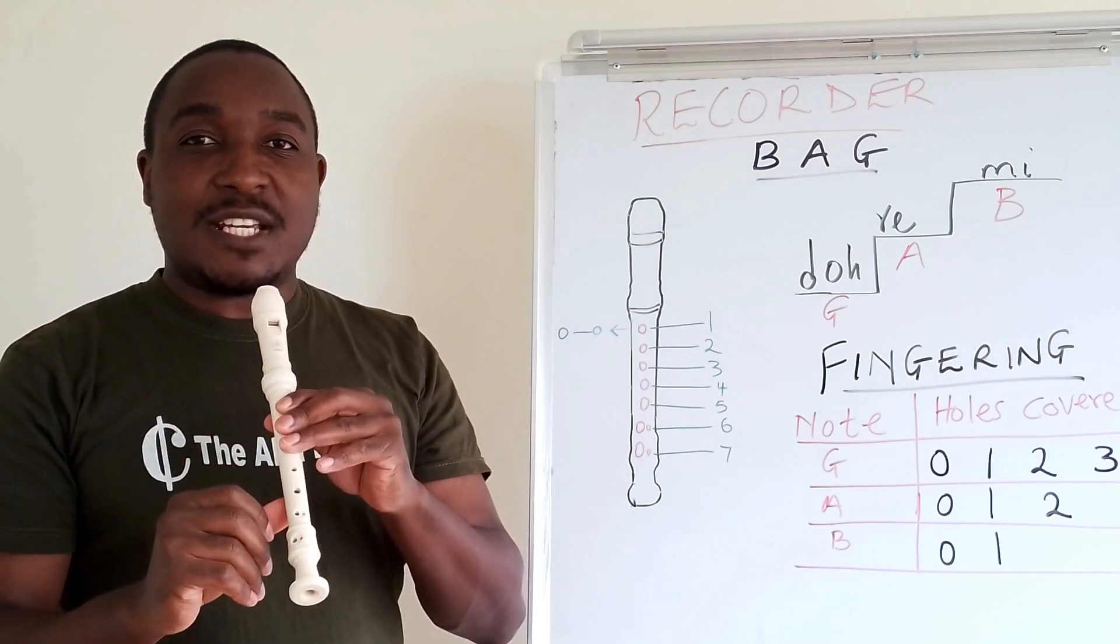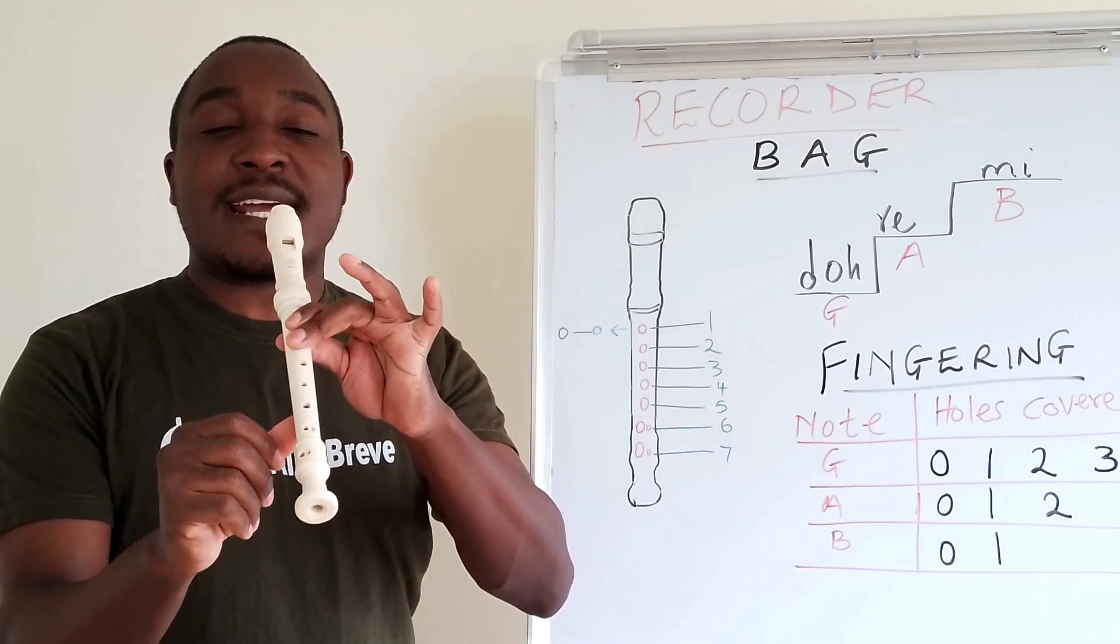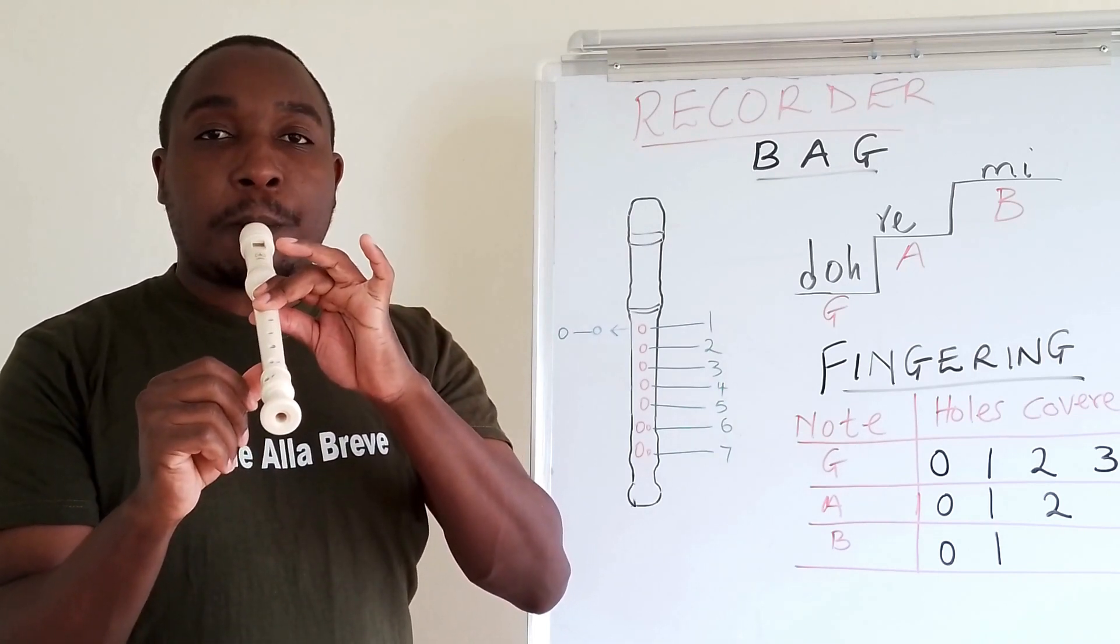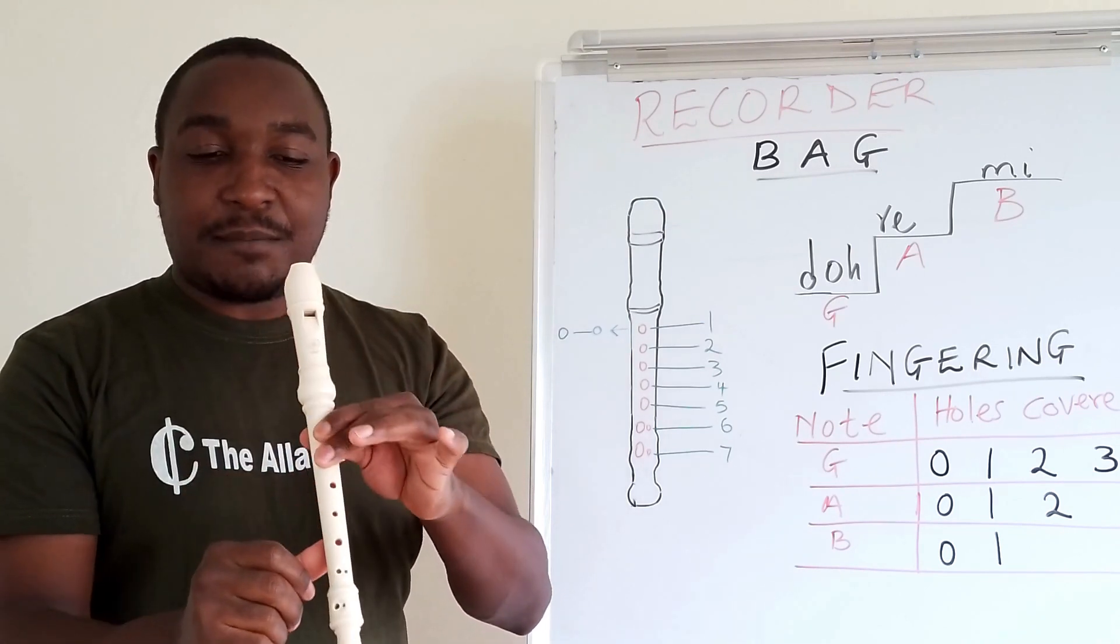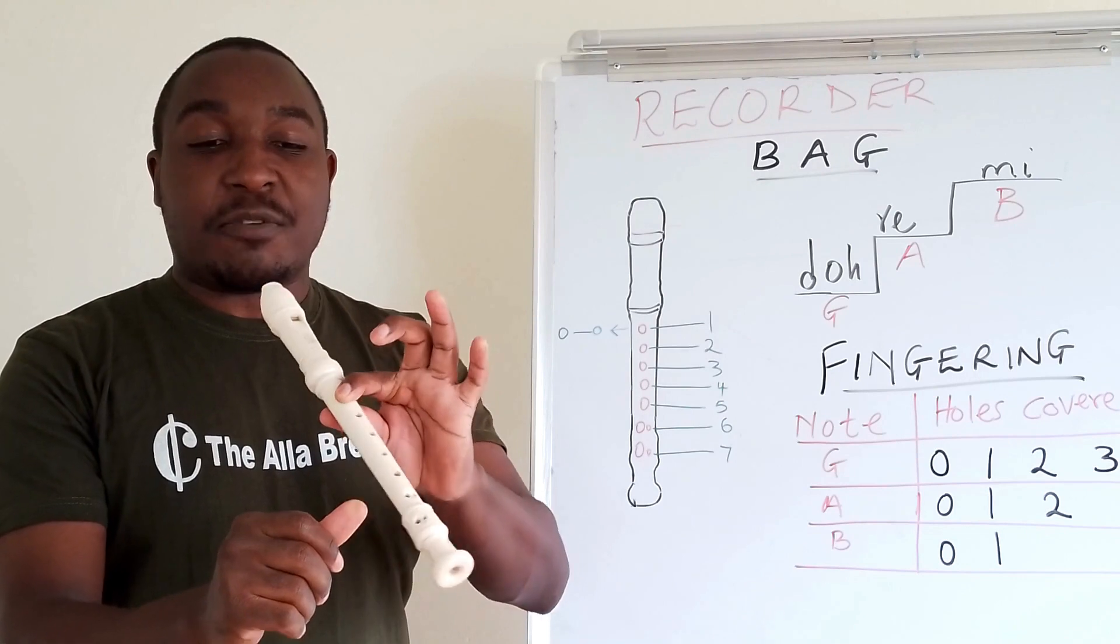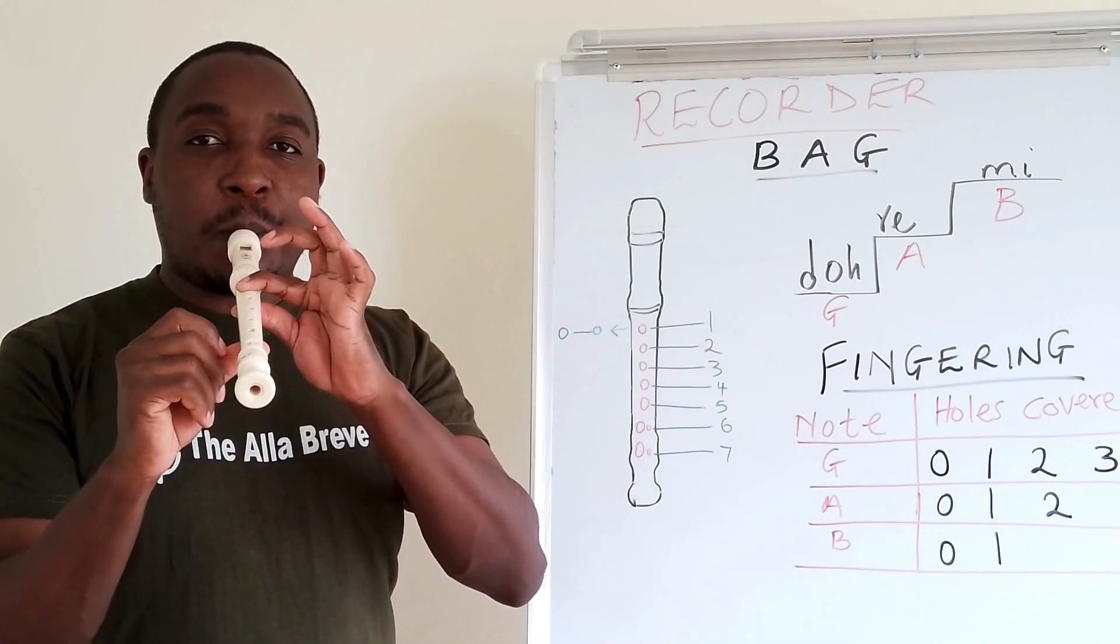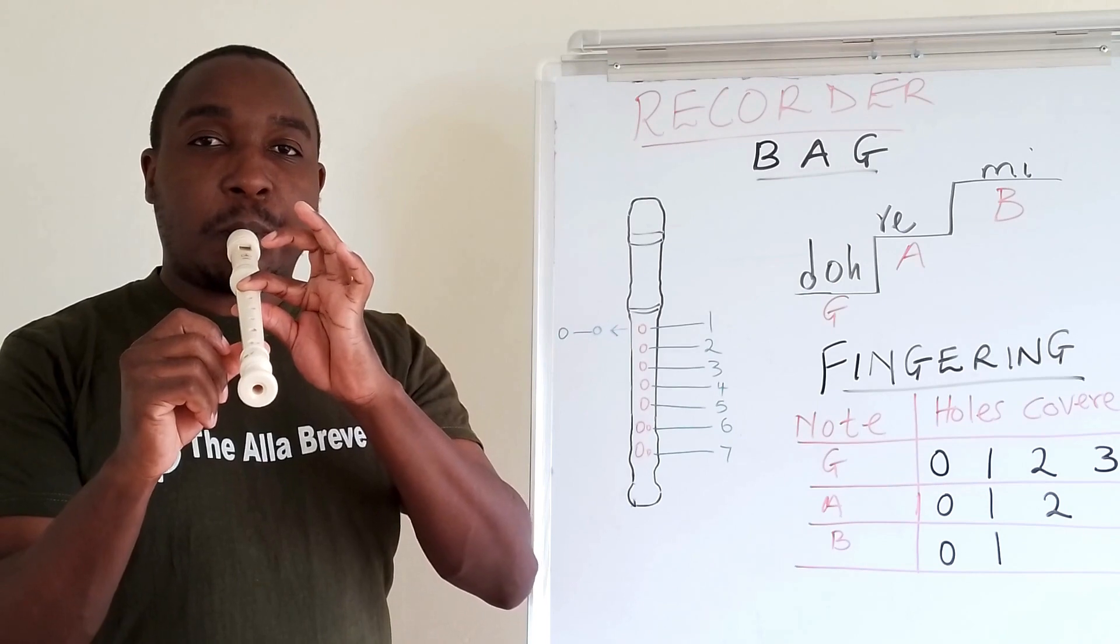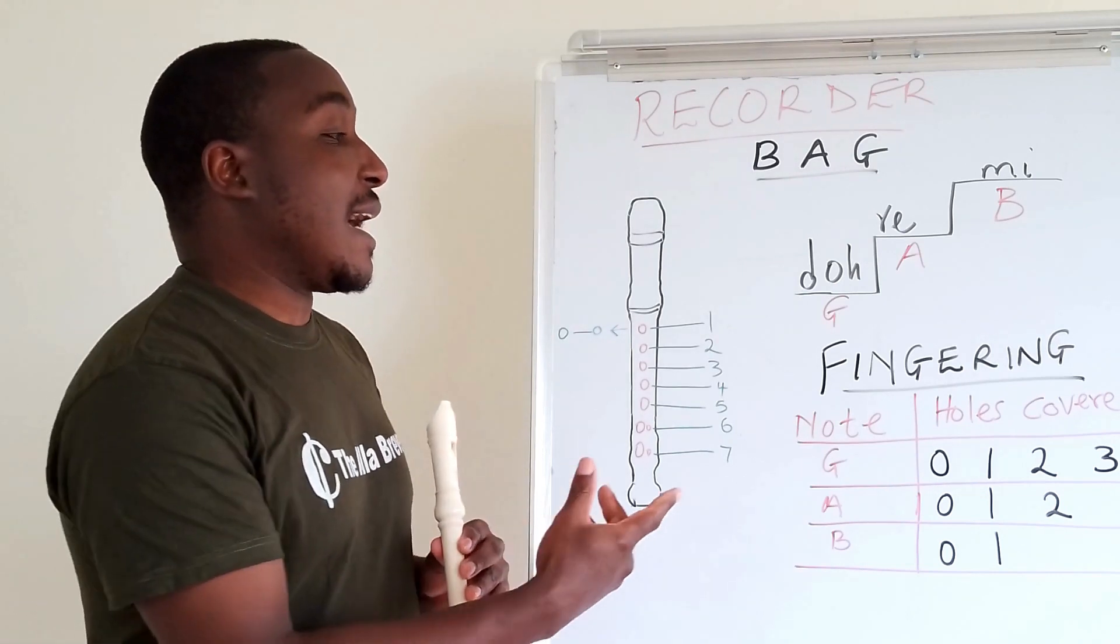That is G. Remove the finger. You remain with A. Remove the finger. You remain with NOTE B. That's how the NOTs are here.